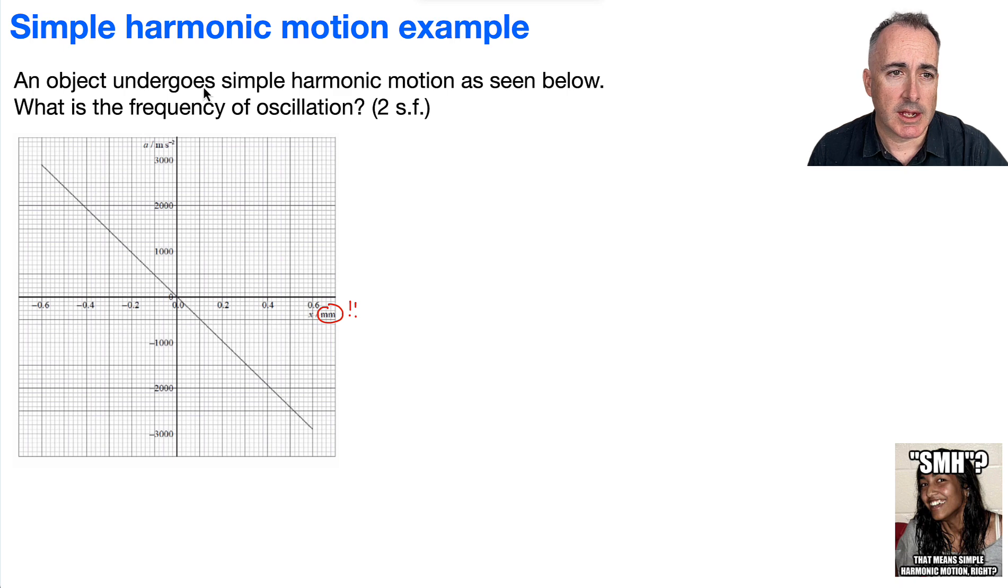So let's consider then what to do for finding the frequency. What we can tell from the graph, turns out we can tell the angular frequency. So we're going to start by finding omega. Now, how are we going to find that? I think it maybe helps to look at the original equation we have. So acceleration in simple harmonic motion goes minus omega squared x.